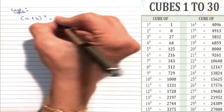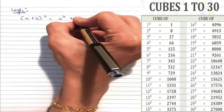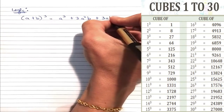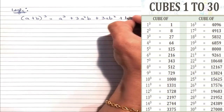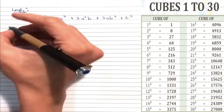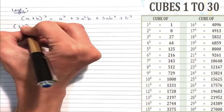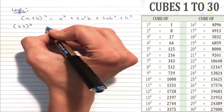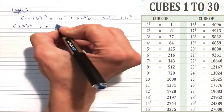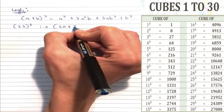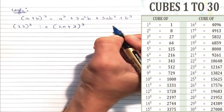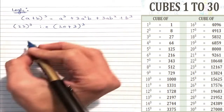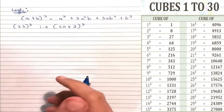Now let us understand the logic. For this, we have used the formula (a + b)³, which is a³ + 3a²b + 3ab² + b³. Now what is a and b in our question, which is 23 cube? So 23 can be written as (20 + 3)³. So 20 is our a and 3 is our b.